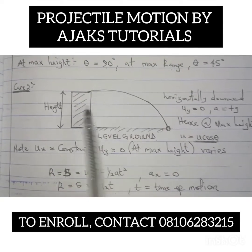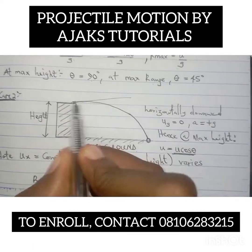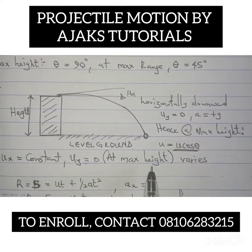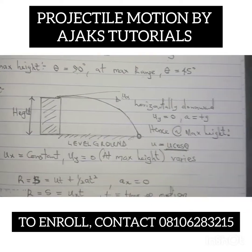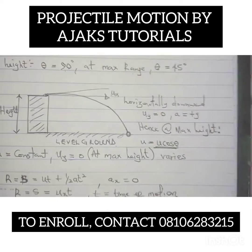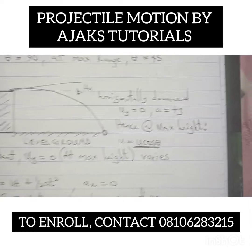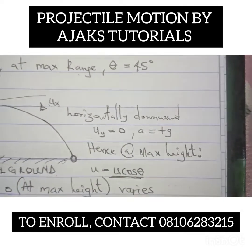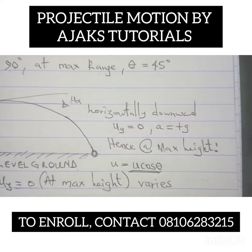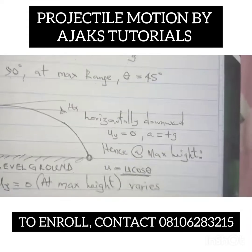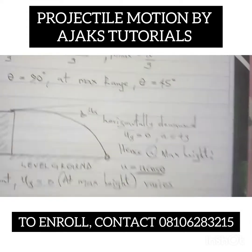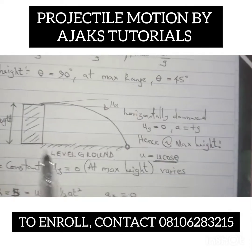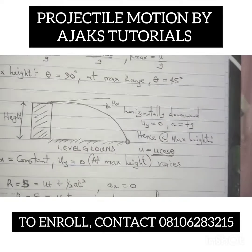When a body is launched from a particular height horizontally, U_x is your initial horizontal velocity. You're launching it downward, and it moves in a parabolic motion — that's still projectile motion. Now, U_y equals zero when a body is thrown horizontally. When a body is thrown vertically upward, the final velocity V equals zero at maximum height. A is positive G in this horizontal launch case, because the body is not opposing gravity. So at maximum height, since U_y equals zero, and U² equals U_x² plus U_y², it simplifies to U equals U_x, which equals U cosine theta.